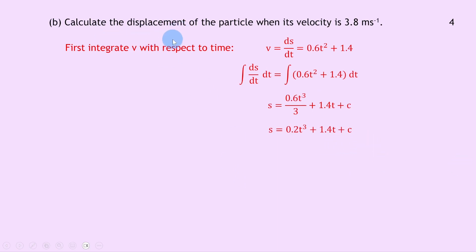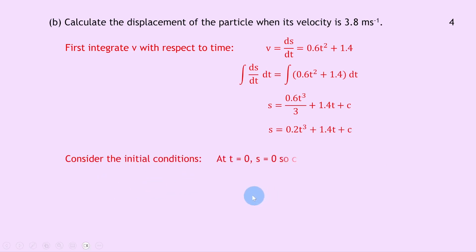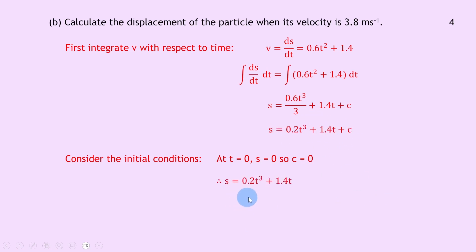We want to find the actual value of the constant c. Using the initial conditions — at t equals 0, s equals 0 — we substitute in to get 0 equals 0 plus 0 plus c, so c equals 0. Therefore our expression for displacement is s equals 0.2t cubed plus 1.4t.